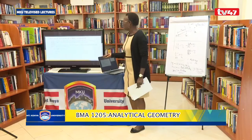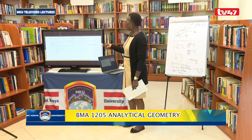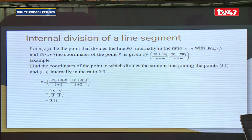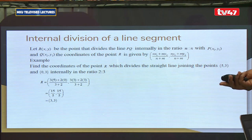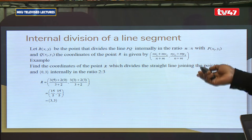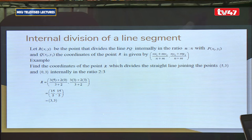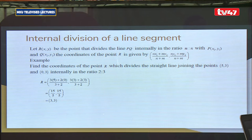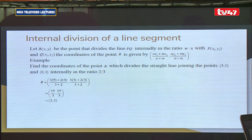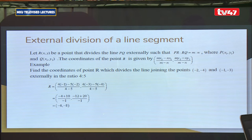Example: Find the coordinates of point R which divides the straight line joining (5, 3) and (0, 1) internally in the ratio 2:3. Using the internal division formulas for x and y coordinates gives us the coordinates of R.